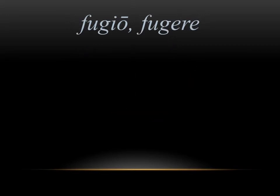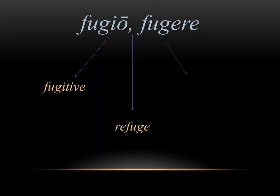Fugio fugere means to flee in Latin, and in English we get the words fugitive, refuge, and even centrifugal, if any of you were in science class. All three of these have to do with fleeing or running away. A fugitive is someone who's running away, and a refuge is somewhere that you go when you're running away. All three of these have that idea of fleeing or moving away from something.